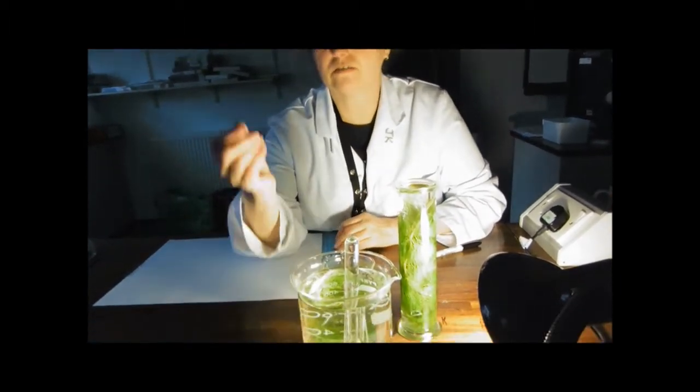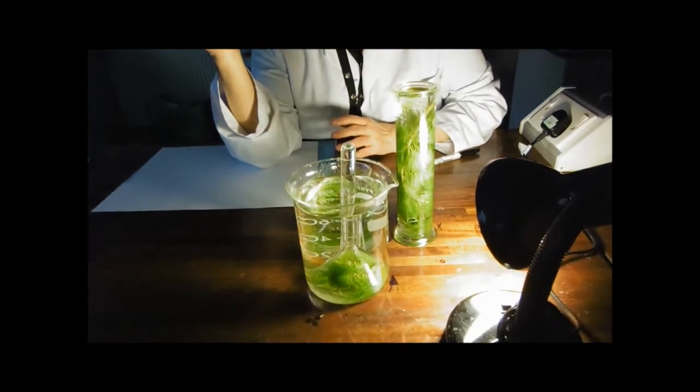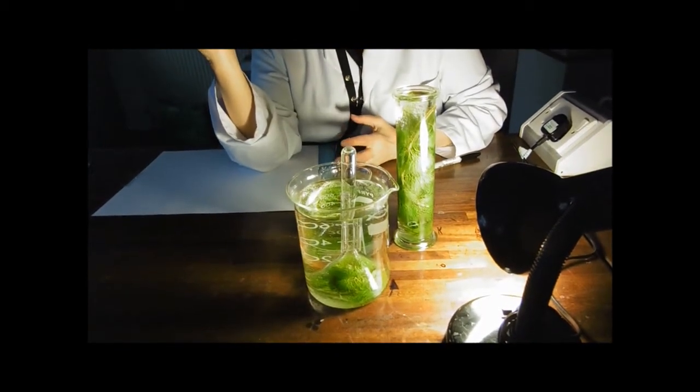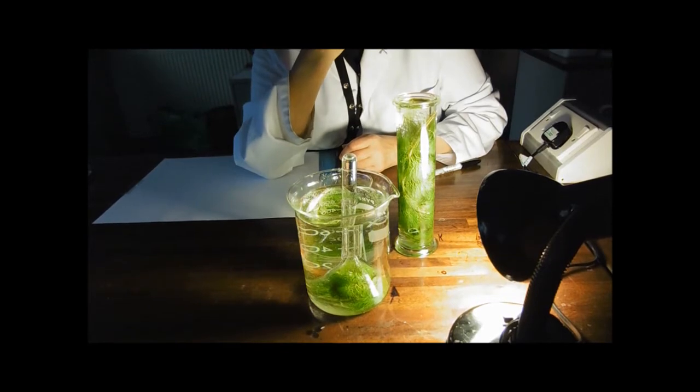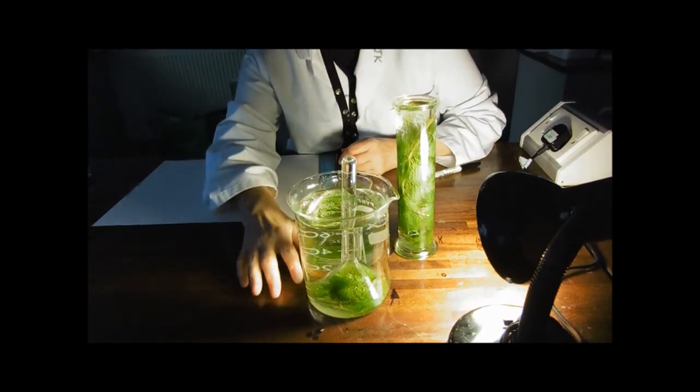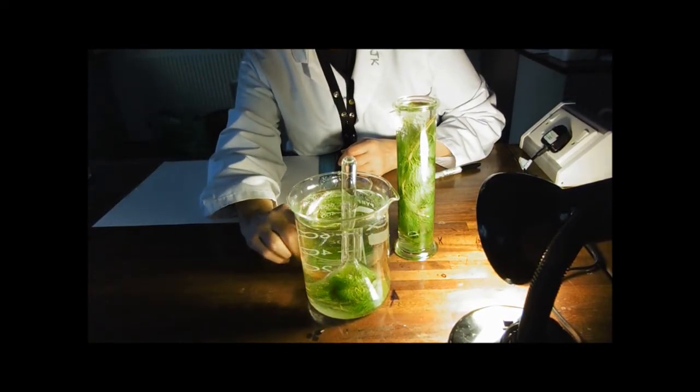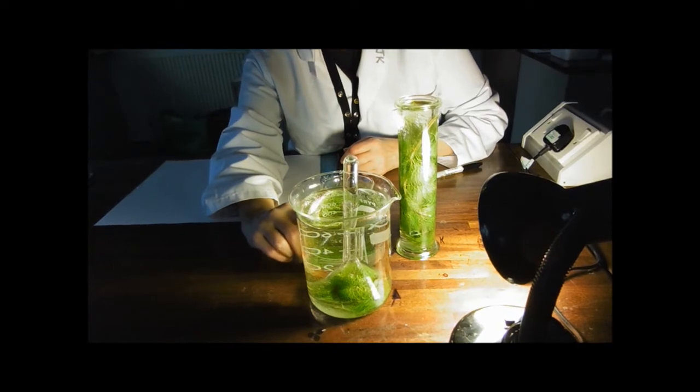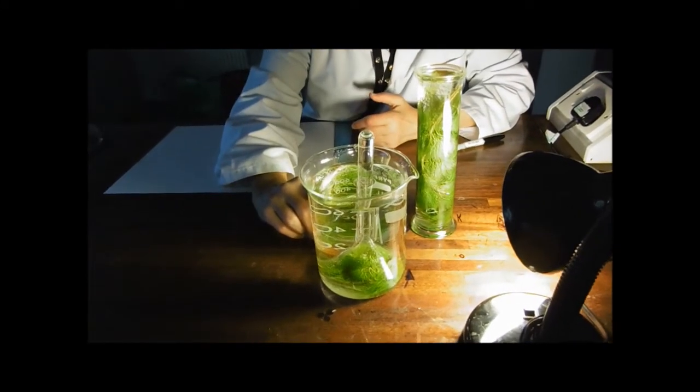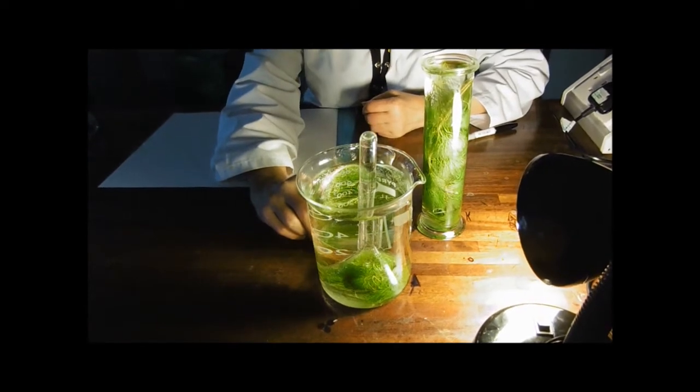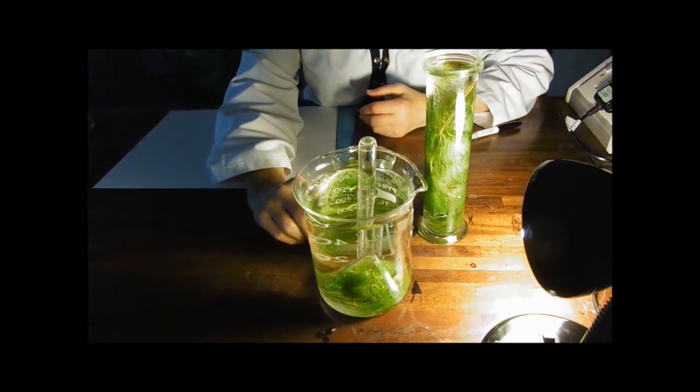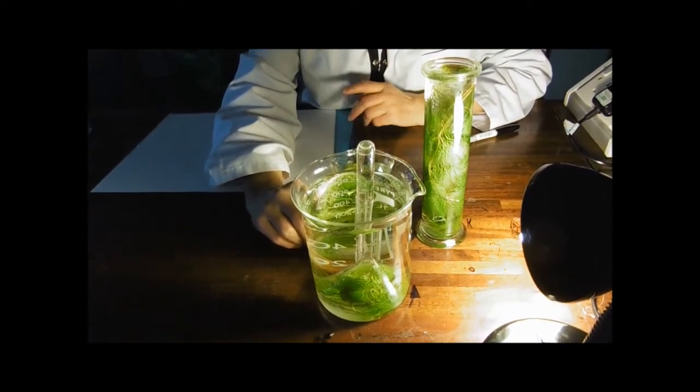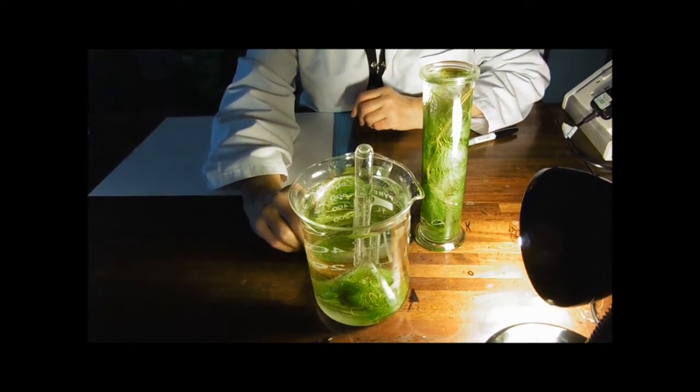I've set this one up just to show you. You should probably have done this at school where your teacher set up a demonstration. What's in the bottom of this funnel is a pond weed, it's actually Cabomba, but you might have used Elodea. Elodea and Cabomba both produce oxygen bubbles from the cut end of their stem while they're photosynthesizing.